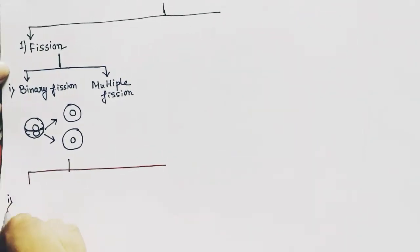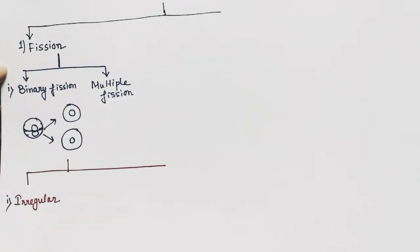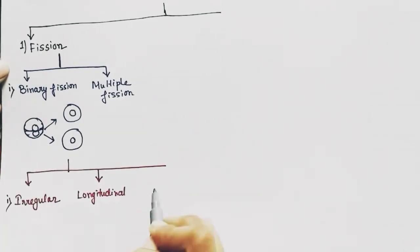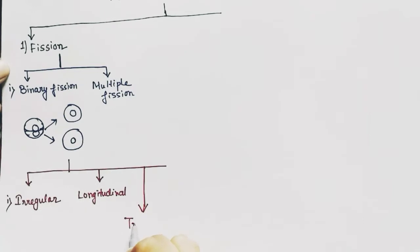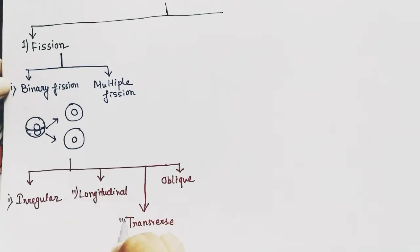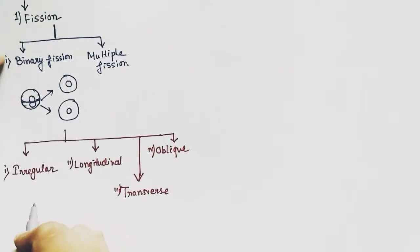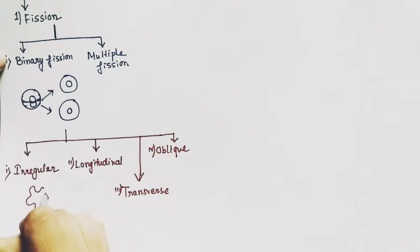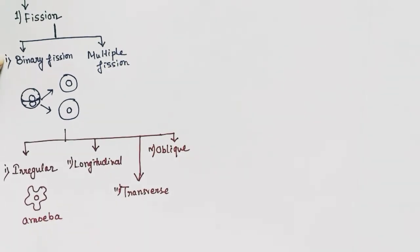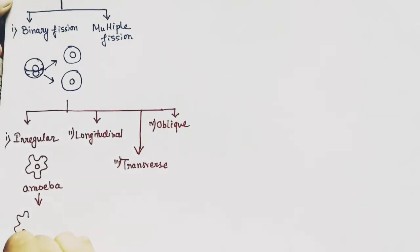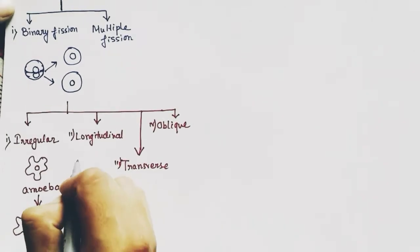There are four types of binary fission found in organisms: irregular binary fission, longitudinal binary fission, transverse binary fission, and oblique binary fission. In irregular binary fission, there is no particular axis or plane of division. It is found in amoeba, which is an example of irregular binary fission.